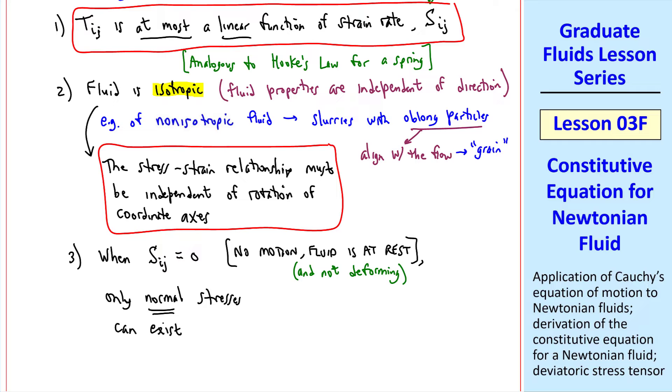Only normal stresses can exist. In other words, there can be no shear stresses. At rest, therefore, Tij must reduce to negative P deltaij, when strain rate tensor Sij is zero.